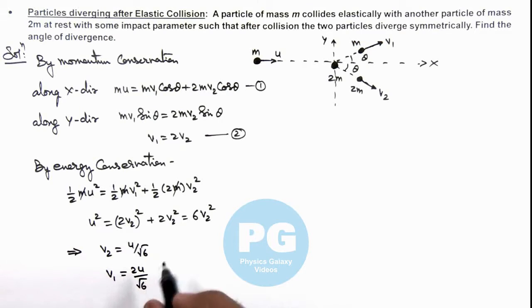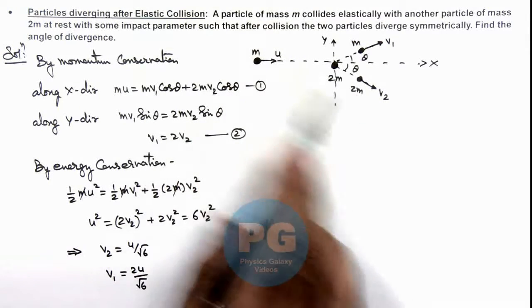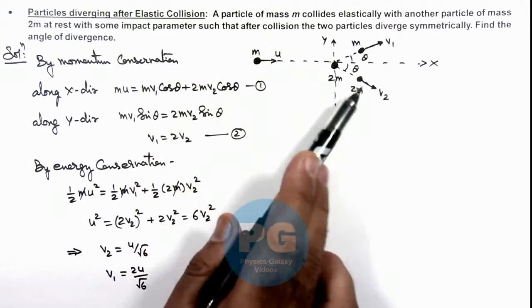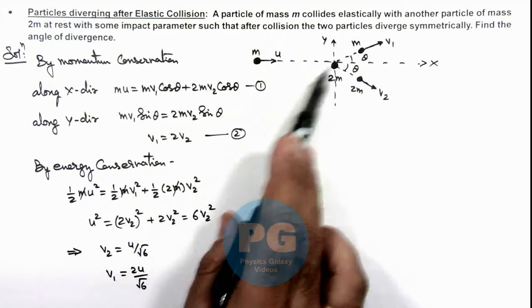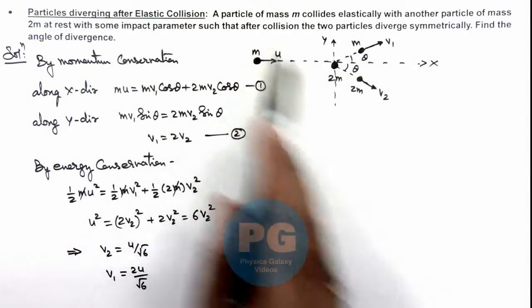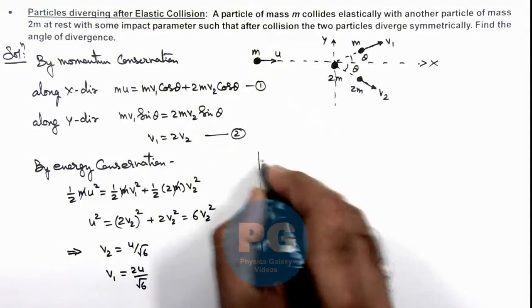These values can also be obtained if we conserve linear momentum along the direction of theta where we can write mu cos theta is 2m v2 and mu cos theta is mv1. This relation of equation 2 can also be obtained by using this. And now we can continue from here.